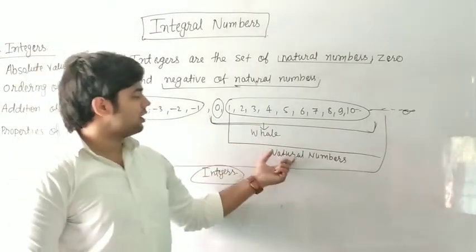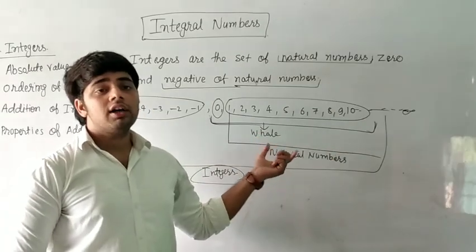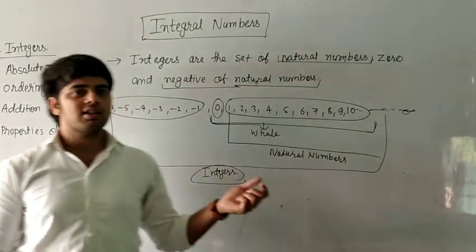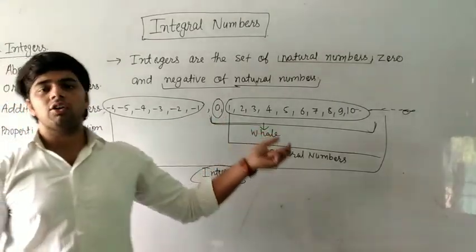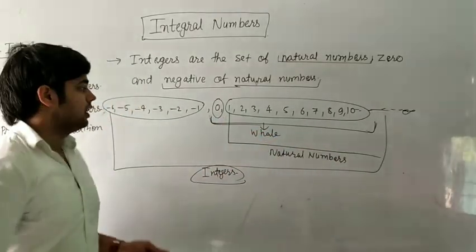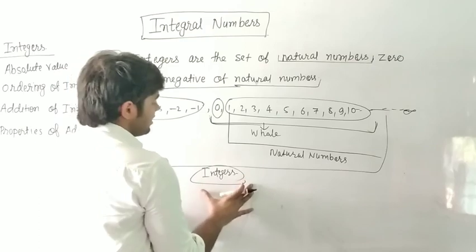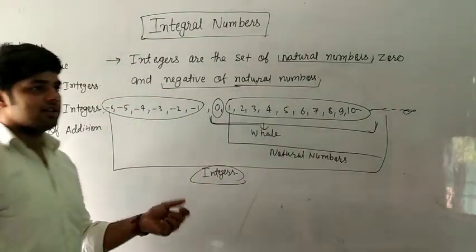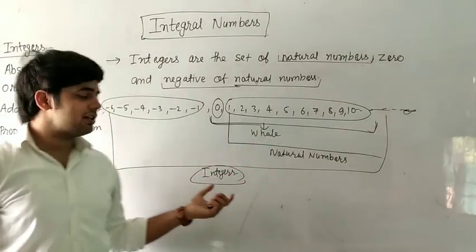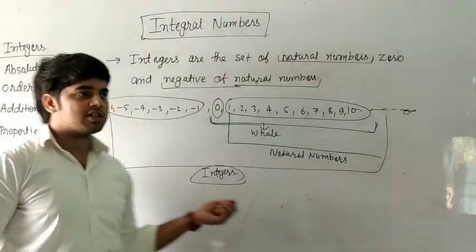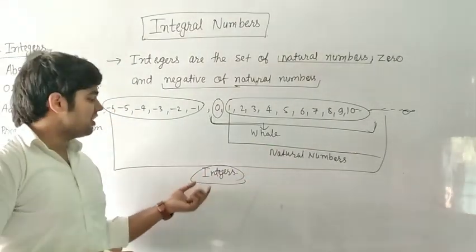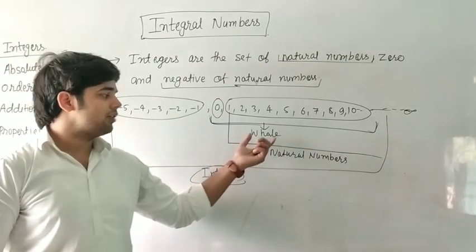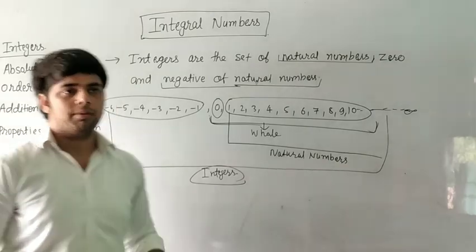Every natural number is a whole number, but every whole number is not a natural number, because zero is a whole number but not a natural number. Also, every integer cannot be part of the natural numbers.